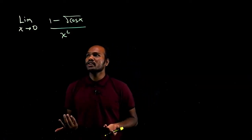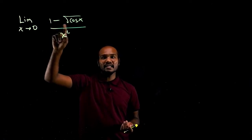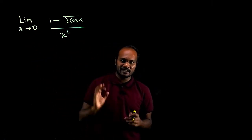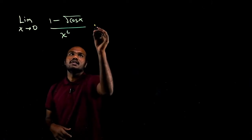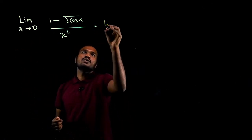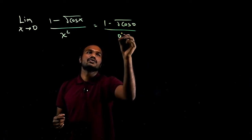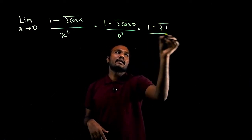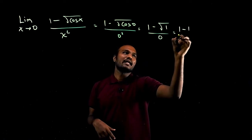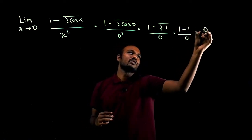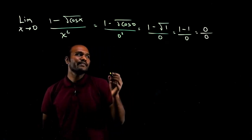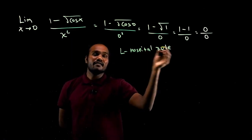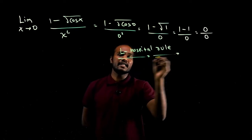Let's move to the next question. Limit x tends to 0 of (1 minus √cos x) divided by x². The golden rule: substitute the limit. So 1 minus √(cos 0) divided by 0². Cos 0 is 1, so 1 minus √1 = 0, divided by 0. That's 0 by 0 form. We need to use L'Hôpital's rule.